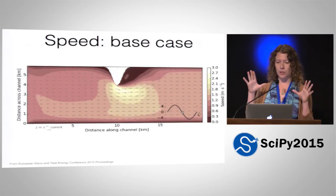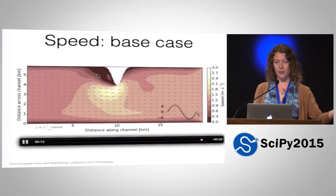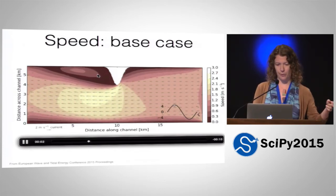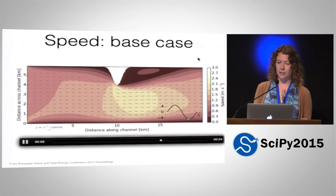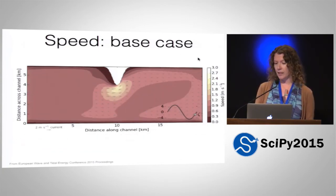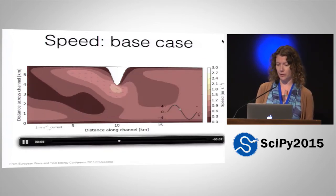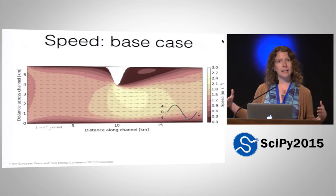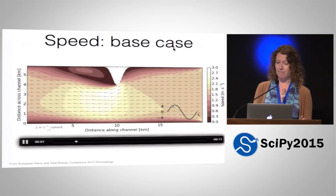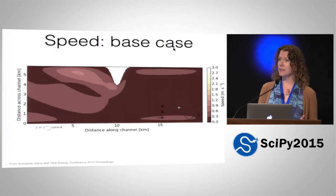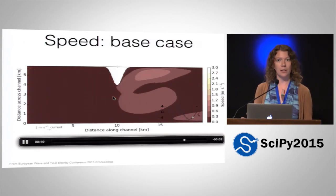Let me show you the actual simulations. This is our idealized headland — we're looking down from a map view. Here's our headland in white. The flow is tidally forced, going back and forth left to right. Whiter is faster speed and darker is lower speed, with arrows indicating magnitude and direction overlaid. The headland acts to increase the flow in this area, and presumably if you're thinking about putting some tidal turbines in here, you'd want to think about putting them in this area.